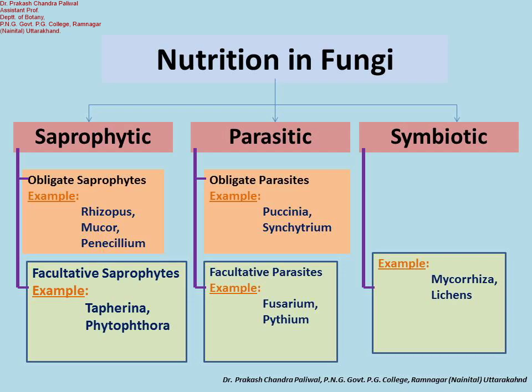In saprophytes, fungi grow on dead organic matter — the decaying tissue of plants and animals. In parasites, they depend on the living tissue of living plants and animals, requiring a living host for their survival. The third category is the symbiotic mode of nutrition, in which fungi are mutually associated with other organisms for their survival.